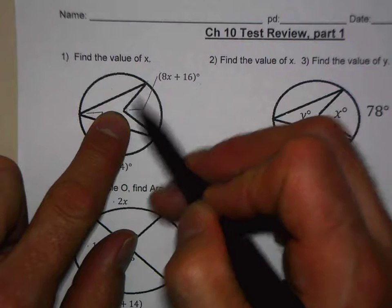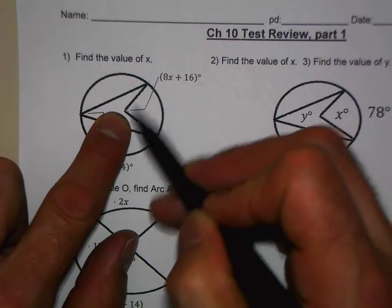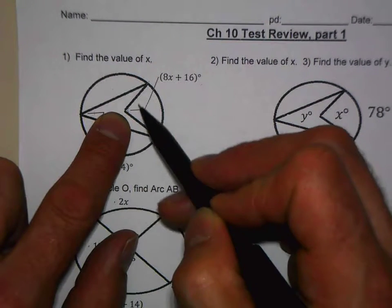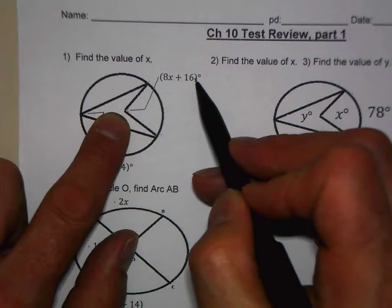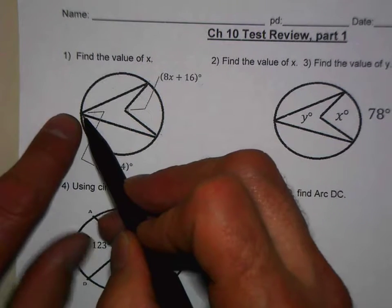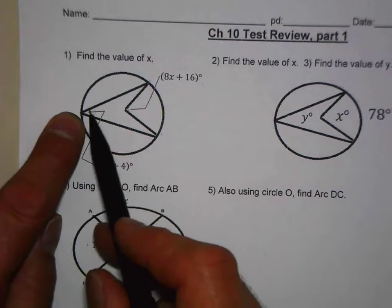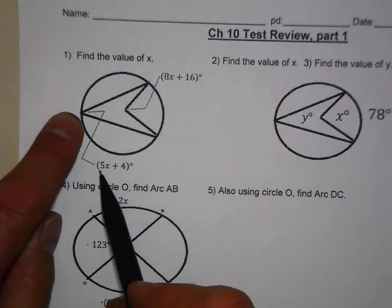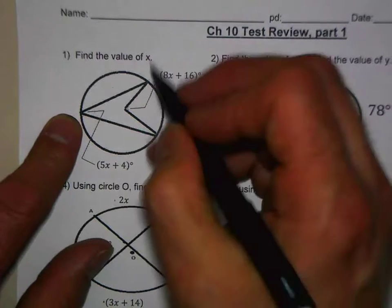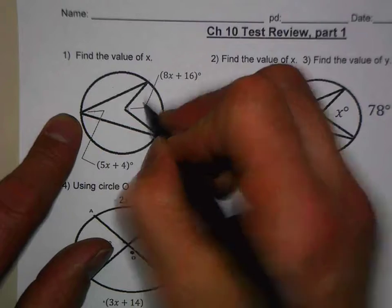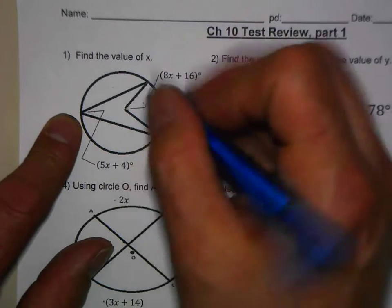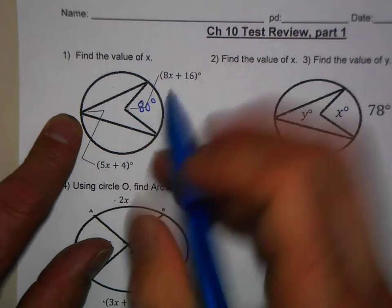One expression is for the central angle. Here's your central angle - the measure of your central angle is 8x plus 16. And this is an inscribed angle, and the measure of this inscribed angle is 5x plus 4. Now you'll remember in class, if this central angle is 80 degrees...